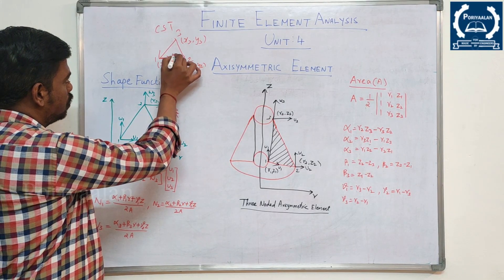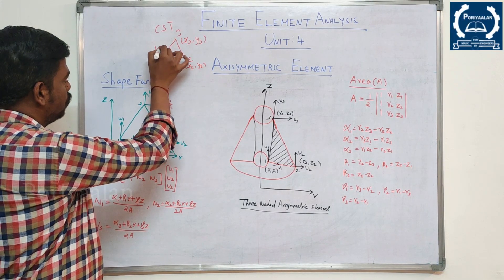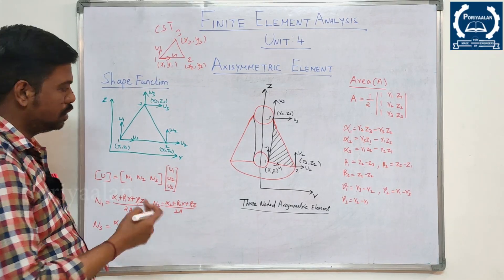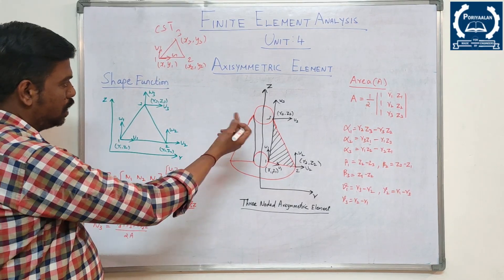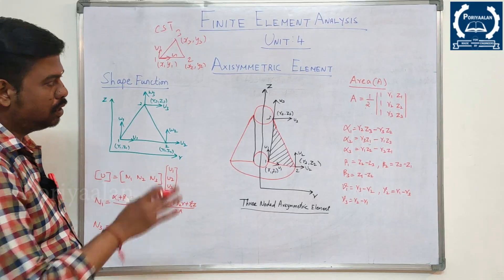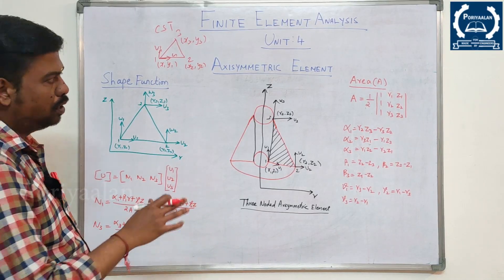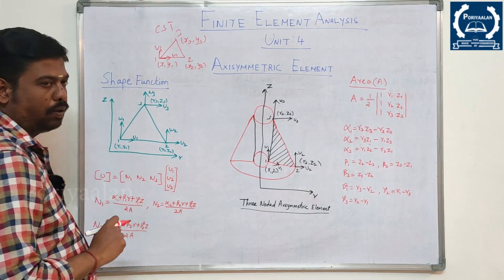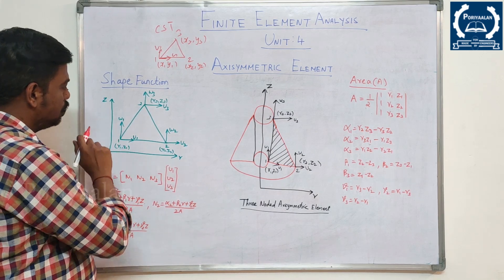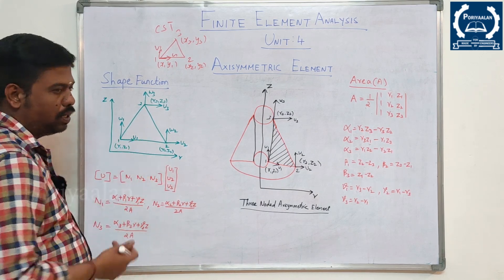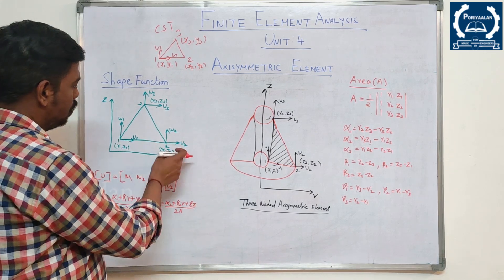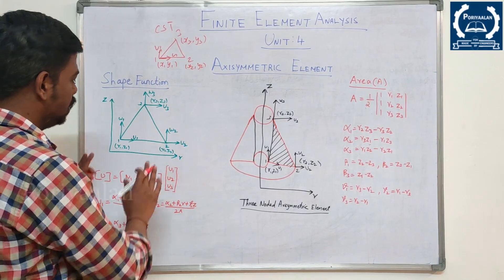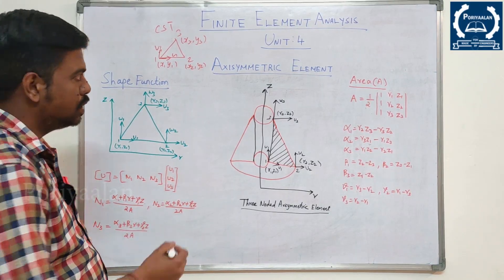For displacements, CST element uses u1, v1, whereas Axisymmetric element uses u1, w1 — because the Axisymmetric element involves rotation. That is why the displacements are u1 and omega1: initial velocity and angular velocity. So the nodal displacements are u1, w1, u2, w2, and u3, w3.